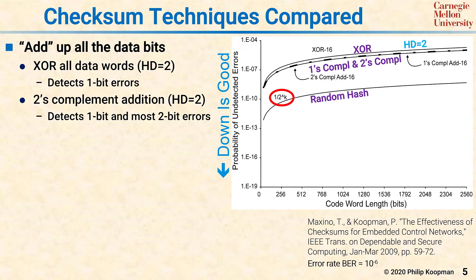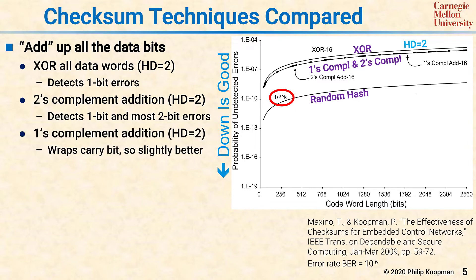You can use a one's complement addition, which wraps the carry bit around, and it does a little bit better, but on this graph you can barely tell the difference. If you're going to use plain addition for a checksum, you should use a one's complement addition checksum if you can. It is the best of this family, but as you can see from this chart, you can do much, much better.